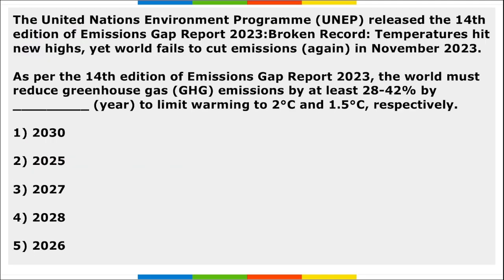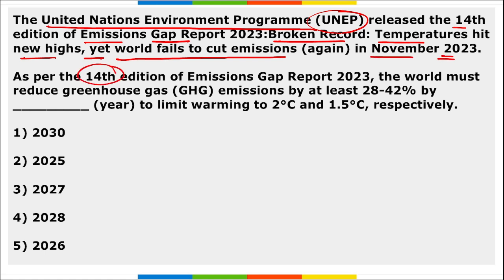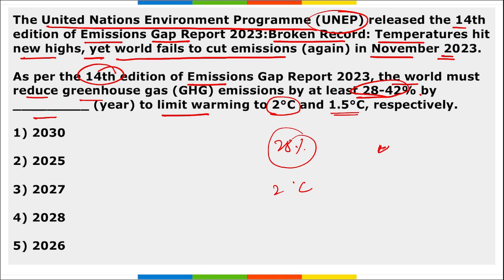Next: UNEP released the 14th edition of the Emissions Gap Report 2023, titled 'Broken Record — Temperatures Hit New Highs, Yet World Fails to Cut Emissions Again.' As per this report, the world must reduce greenhouse gas emissions by at least 28% to limit global warming to 2°C, or by 42% to limit it to 1.5°C — both by the year 2030. The report emphasized that the only way to prevent exceeding the 1.5°C limit is to accelerate implementation action in this decade.